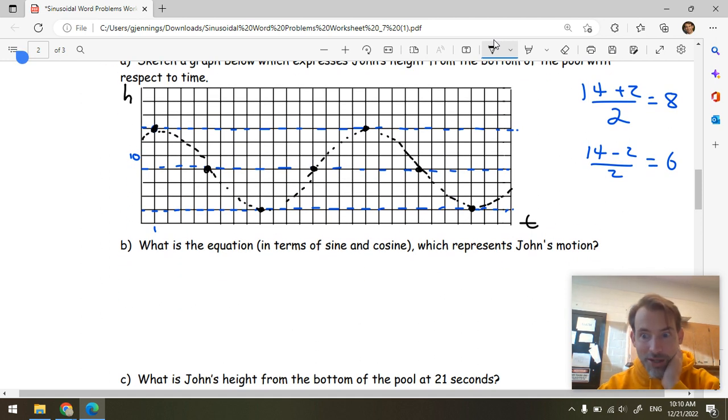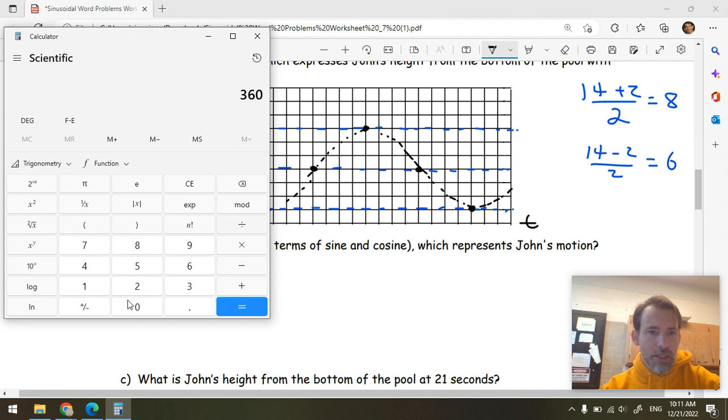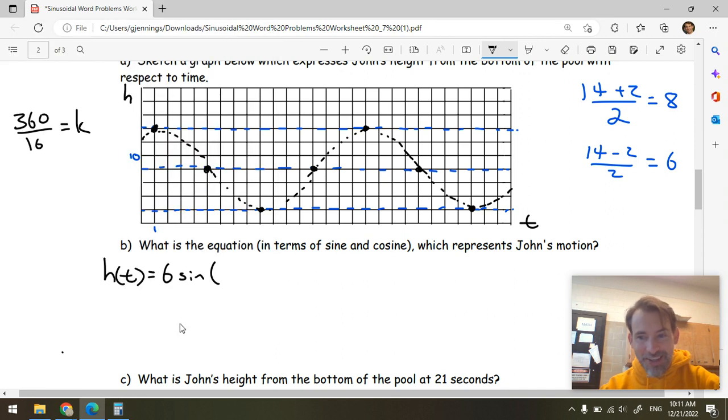All right. So write an equation in terms of sine and cosine. If you insist. All right. So h of t is equal to, well, we know the amplitude. It was 6. And we'll do sine first. Sine of bracket. What's the period? Well, the period was 16. So I need to go 360 divided by 16 to find k. I believe that was like 22.5 or something weird. 360 divided by 16 gives us 22 and a half. It's 22 and a half multiplied by x minus d. We don't know d yet. And then we're going to do plus midline is 8.